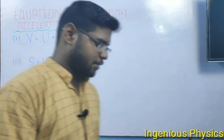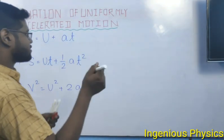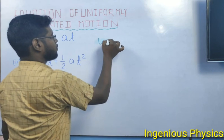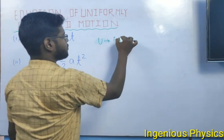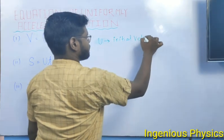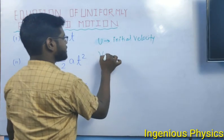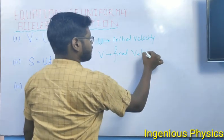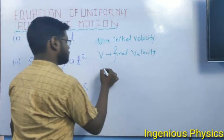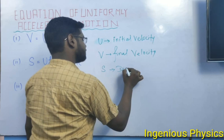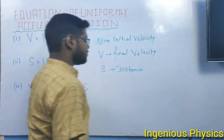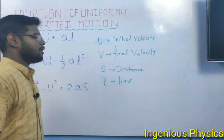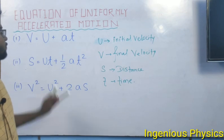Let's start the discussion now. First of all, we will recognize the various terms present here. U represents initial velocity, V represents final velocity, S stands for distance, and T stands for time.